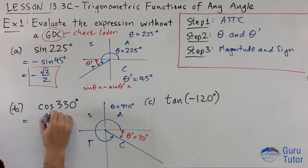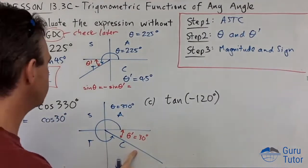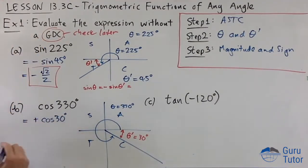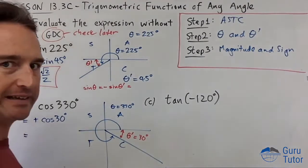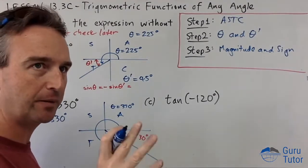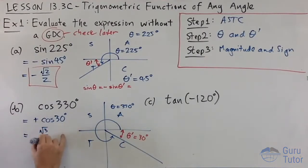We've got θ-dash. It's going to equal cos of the acute reference angle, but is it positive or negative? Well, in the fourth quadrant only cosine is positive, and this is cos, so it's plus. What is cos(30°)? Going back to those special triangles: root 3 over 2. There we go.